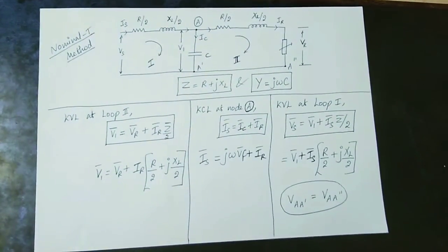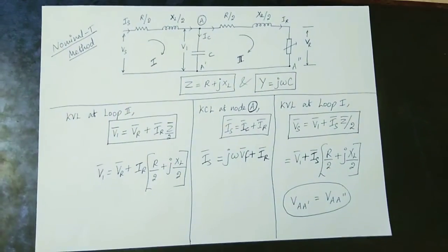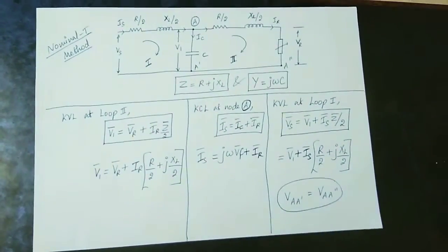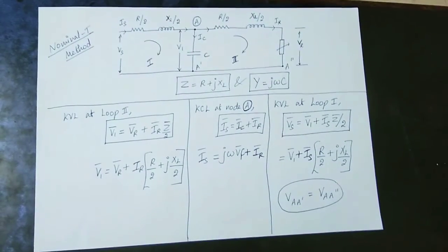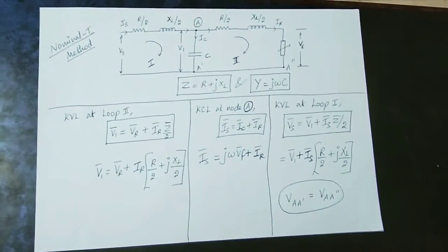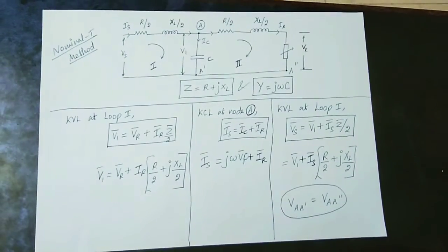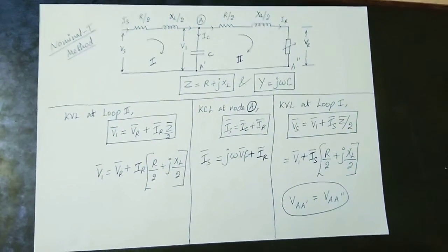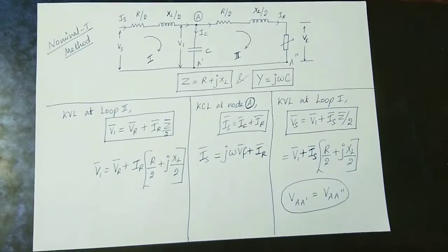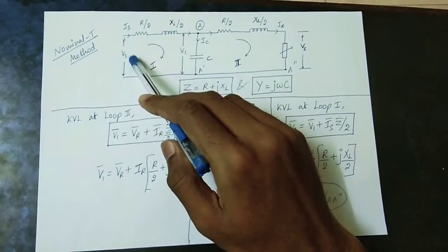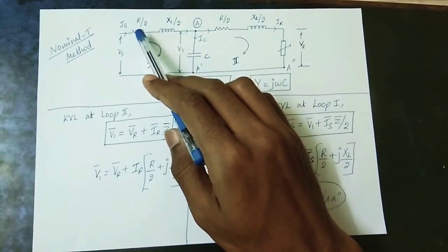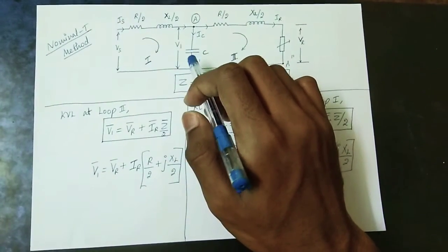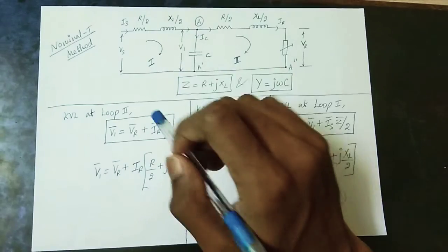The analysis is straightforward. We will discuss three equations using two KVL loops. The circuit has a sending end voltage, a sending end current, R/2 and X/2 on one side, loop 1, a central capacitor, and a voltage V1 at the center node.